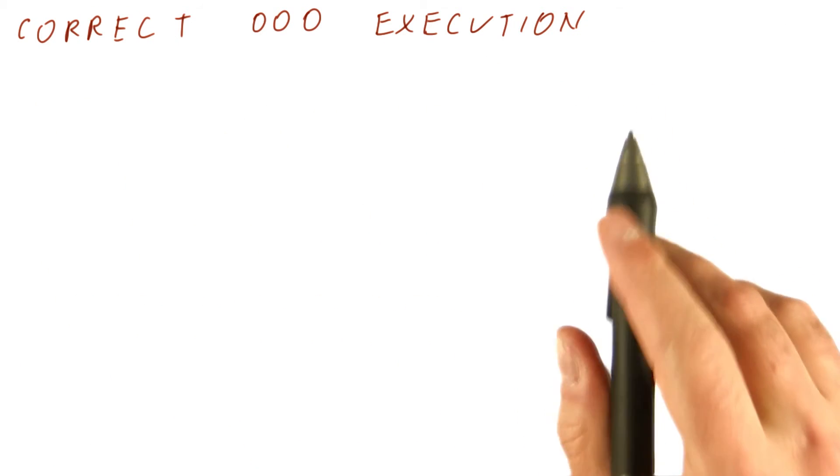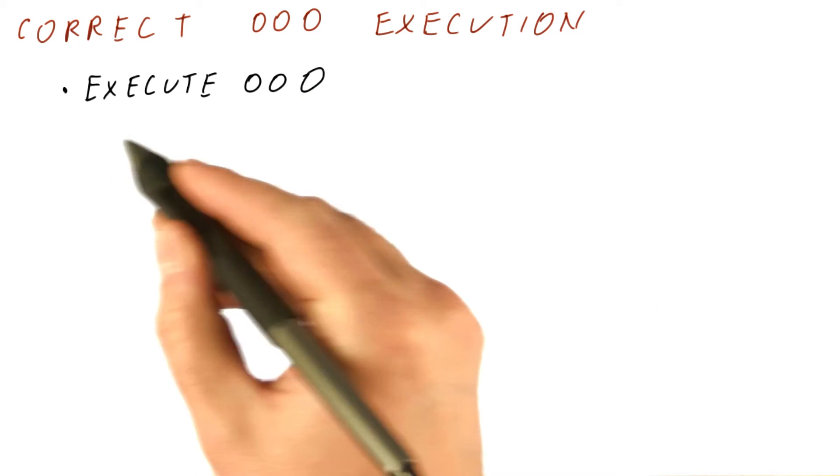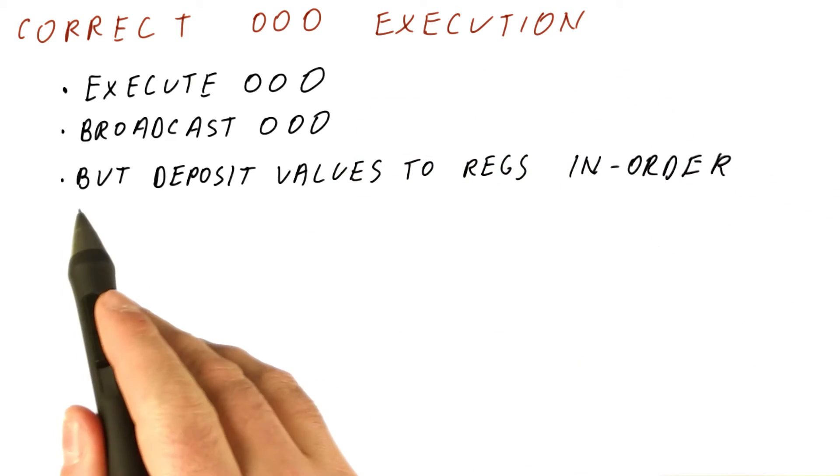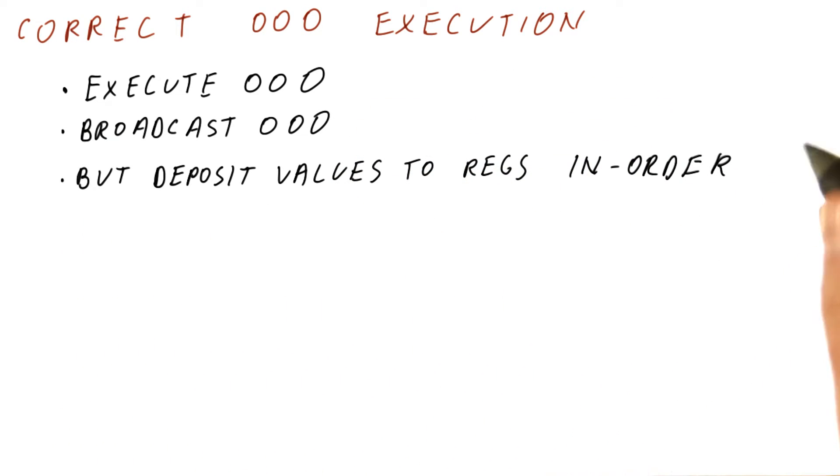Let's see how we should do correct out-of-order execution. We should execute out of order, broadcast out of order, but deposit values to registers in order.